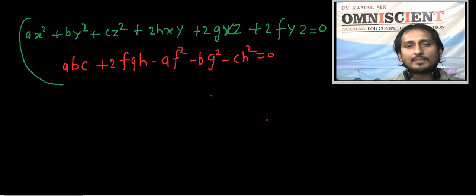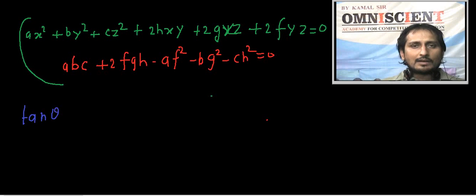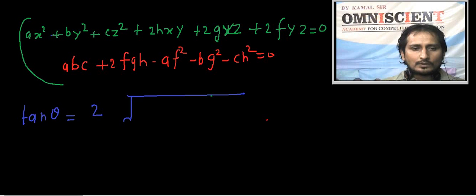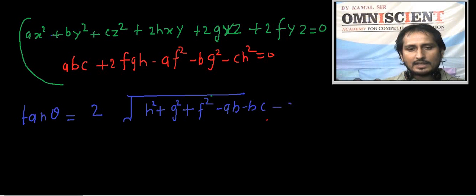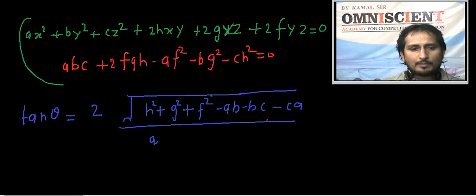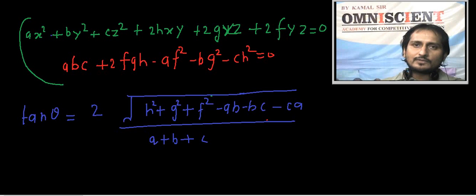तो उनके बीच के angle हम कैसे निकालेंगे? यह note कर लो - tan θ होता है 2 under root (f² + g² + h² - ab - bc - ca) upon (a + b + c). और यह angle 90° होगा अगर a + b + c = 0.